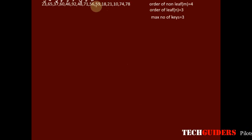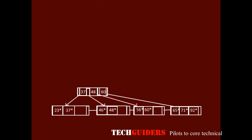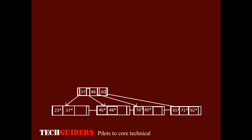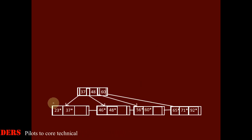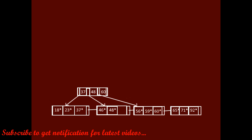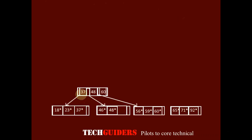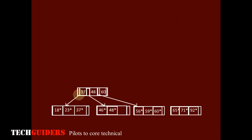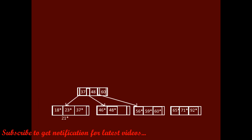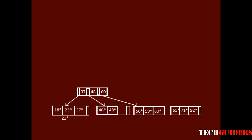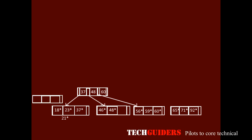After 56, keys 59 and 18 are inserted — 59 after 56 and 18 before 23. Next is 21. 21 is less than 37, so go to the left pointer. 21 should occupy a place after 18, but there is no more space in this node. An overflow will occur, so we should split the node into two.